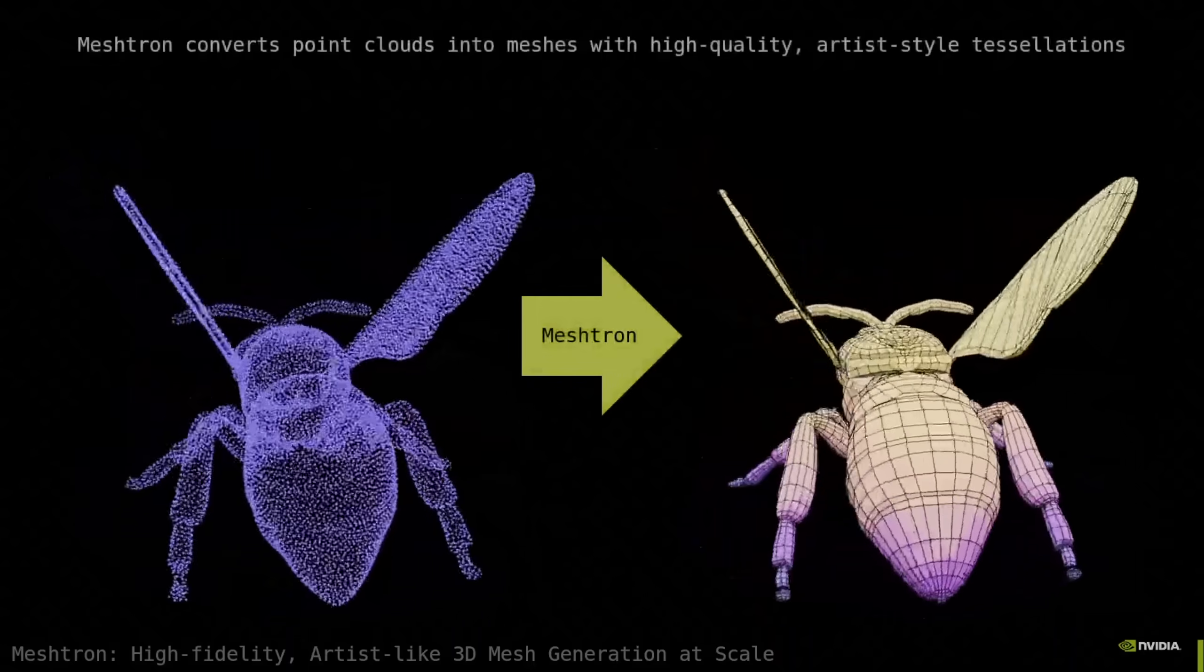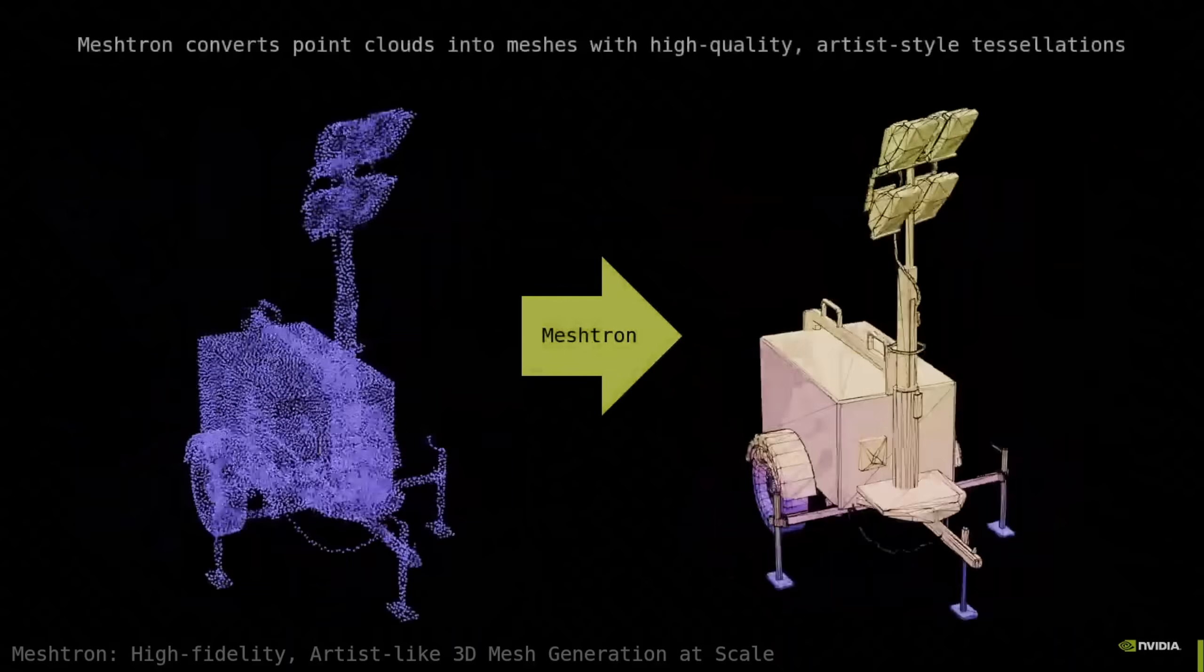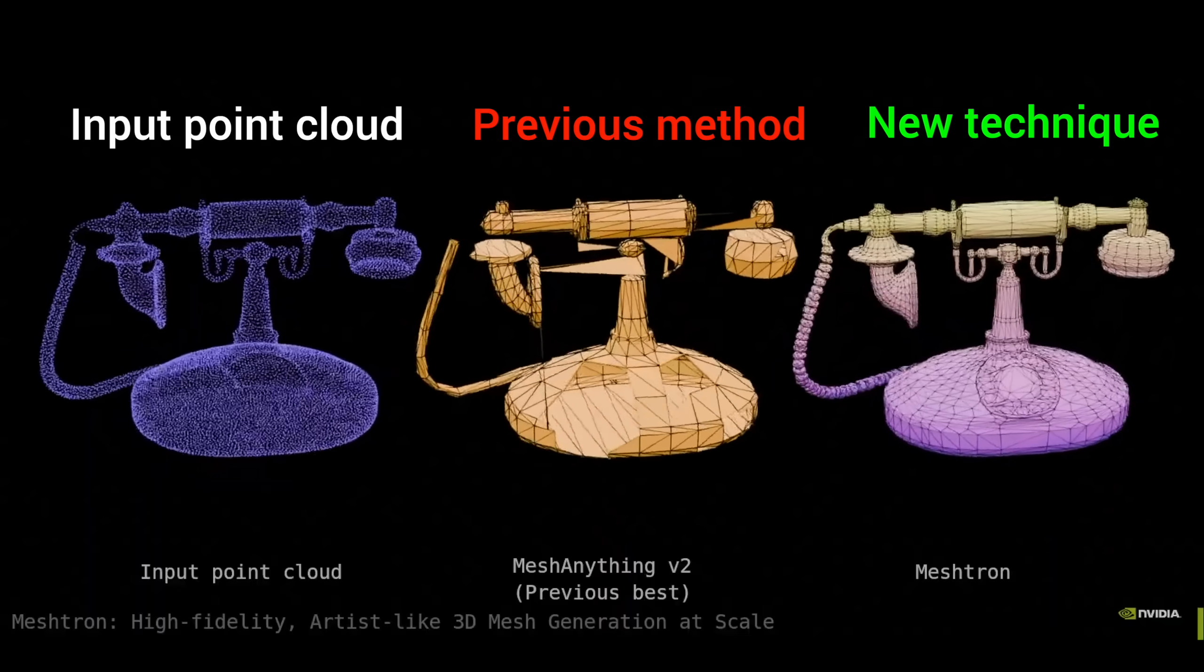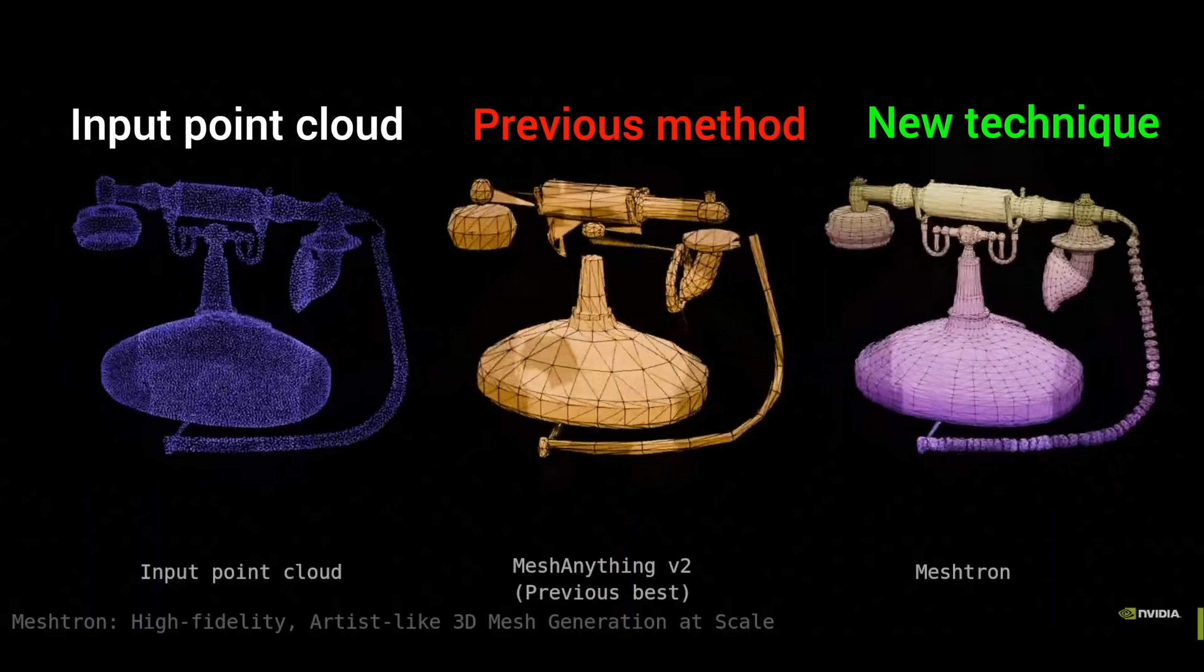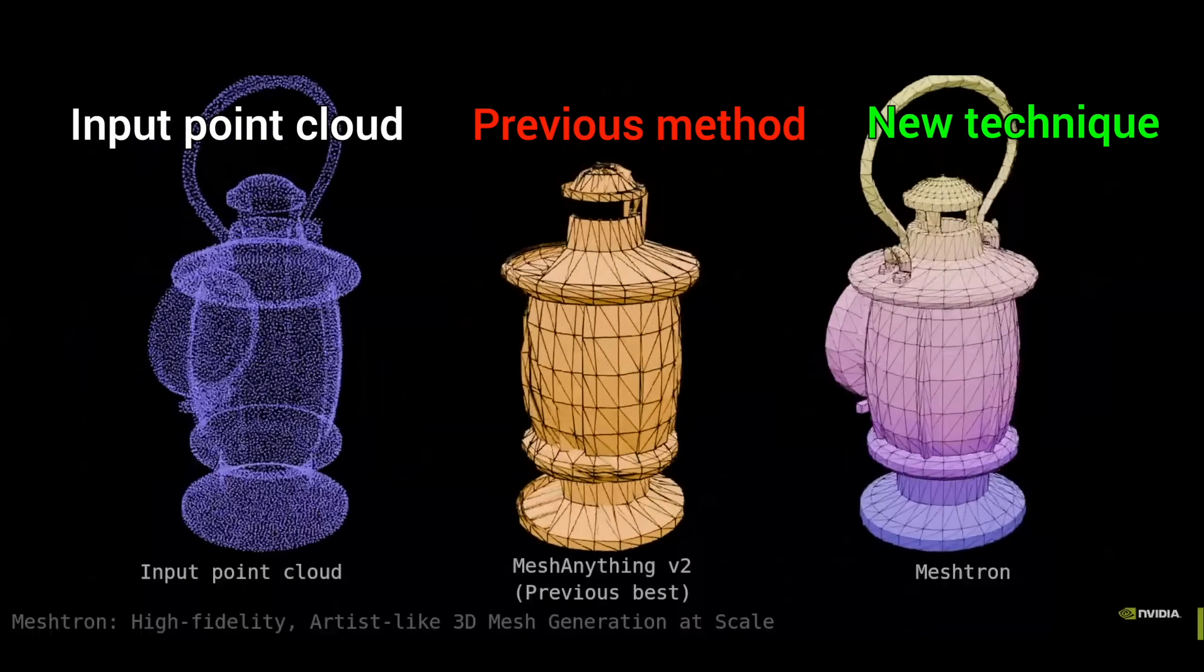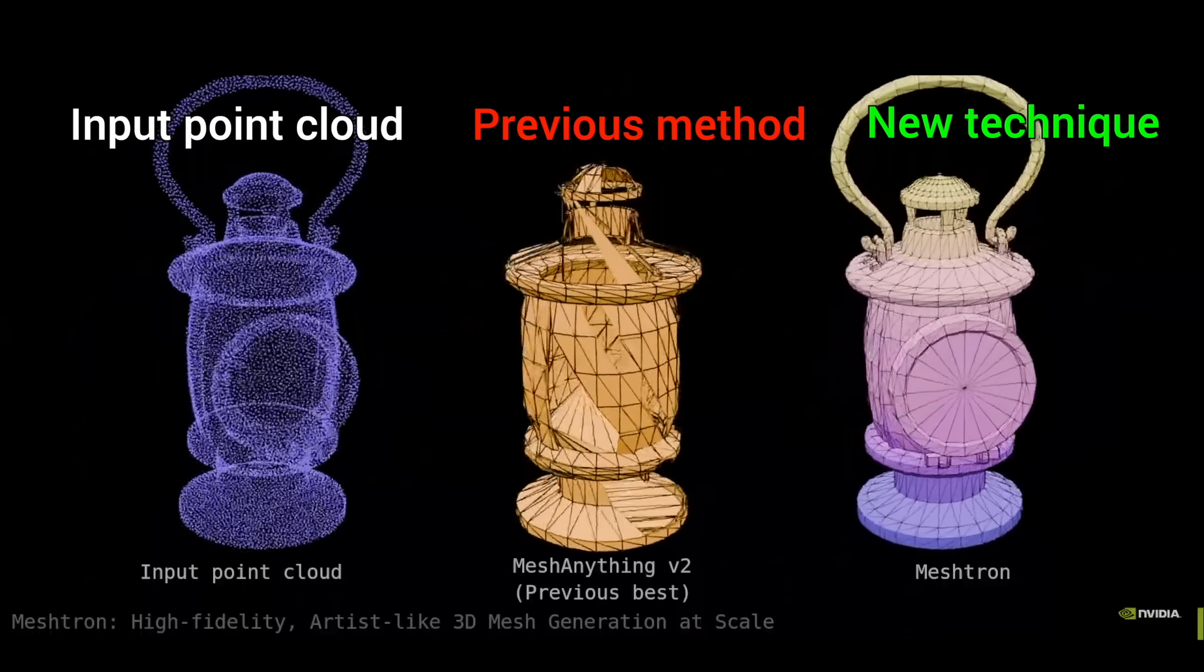Now, wait a second, you see this bluish thing on the left. So, is this geometry coming from thin air? I mean, from just a text prompt? No, but almost, yes. You see, the input is a point cloud. And to that, I say thank goodness.